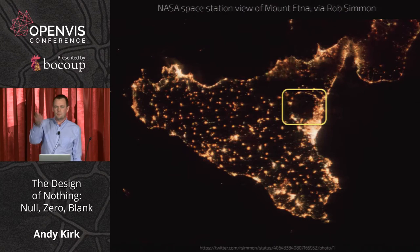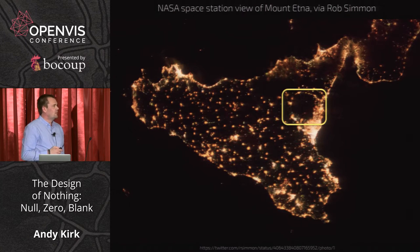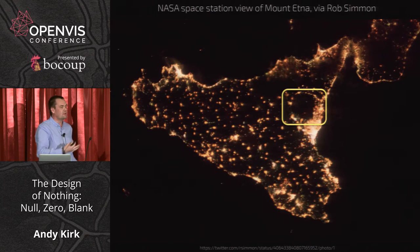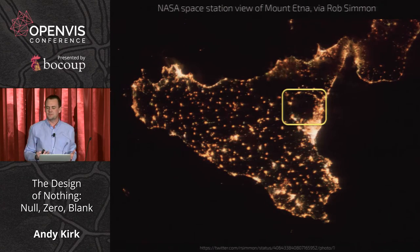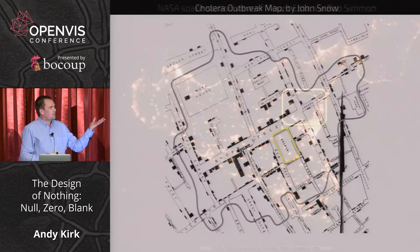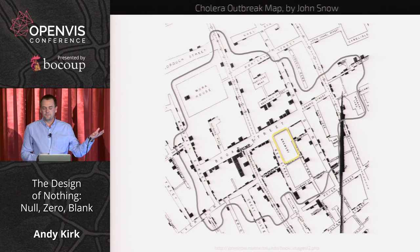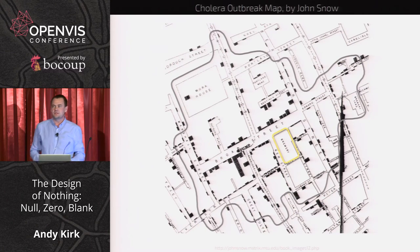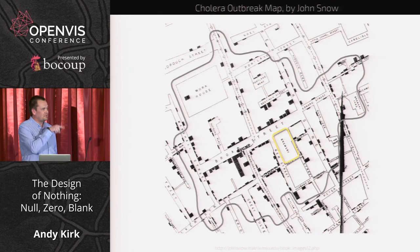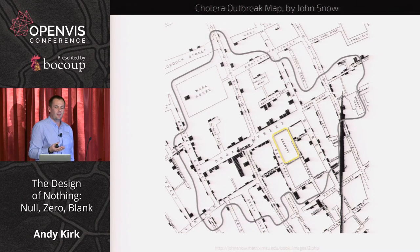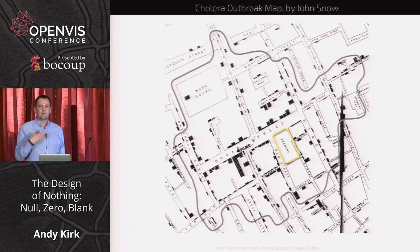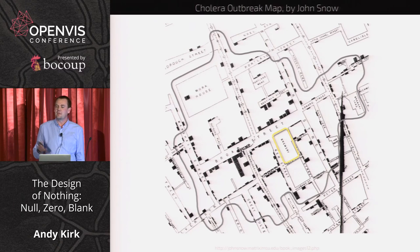A picture shared by Rob Simmons on Twitter reveals Mount Etna, but you need to know it exists on that island to recognise that significant circle of emptiness. Jon Snow's famous cholera map: the gaps in terms of lack of deaths in a particular rectangle were the brewery — workers there drank beer rather than water, so they didn't get cholera. It's a pretty striking gap in the data.